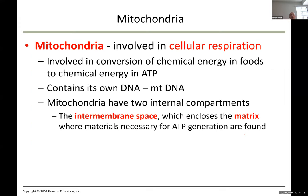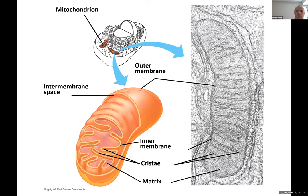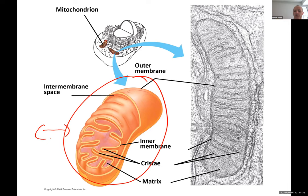The last two structures we'll learn today are mitochondria and chloroplasts, both involved in energy production. Mitochondria perform cellular respiration — they break down glucose and produce ATP. ATP is what we call the energy or the fuel for the cell.